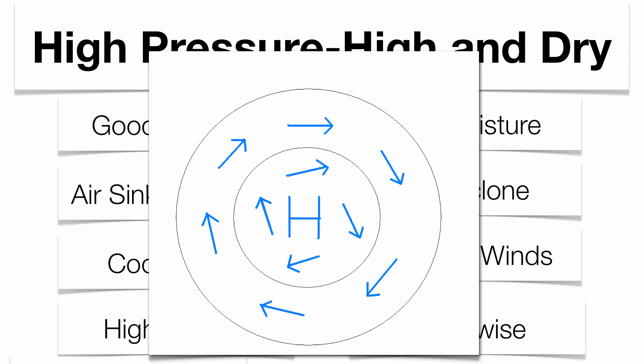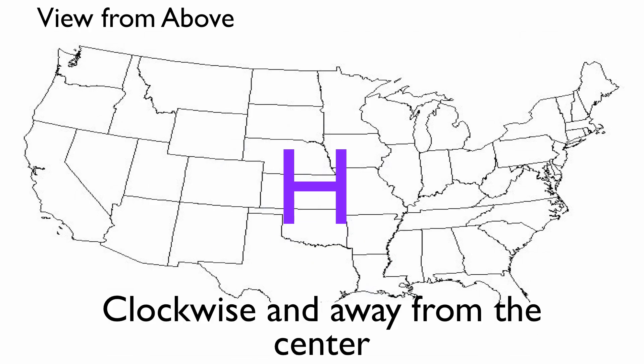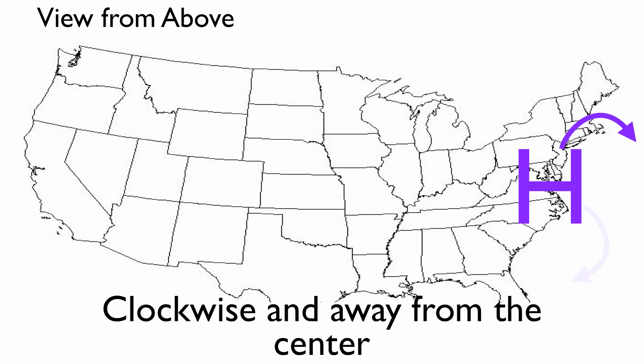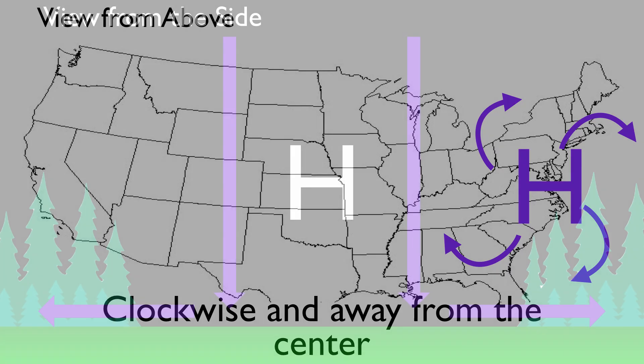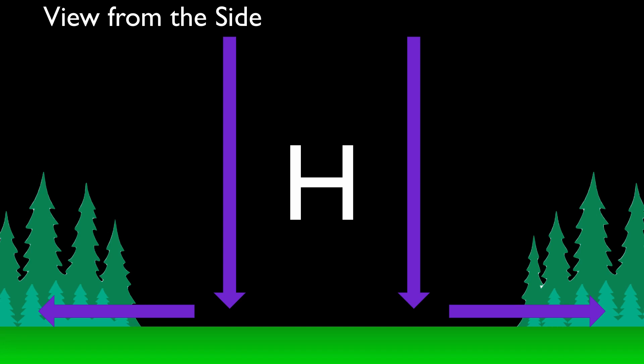This is what a high pressure center might look like in the northern hemisphere — clockwise rotation and outward. This is a view from up above: clockwise and away from the center. The winds blow from west to east because of our westerly wind belt; the jet stream causes it to move west to east across the United States, and you see the outward clockwise rotation. This is a side view with the air mass sinking and then diverging at the surface — very dry, very dense air, generally cool.